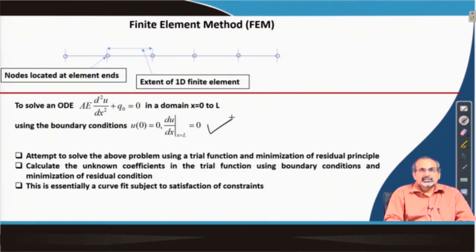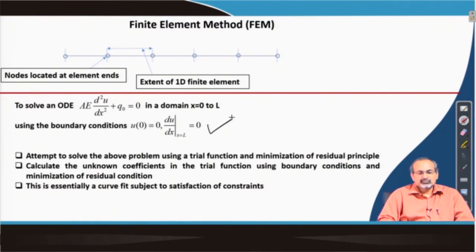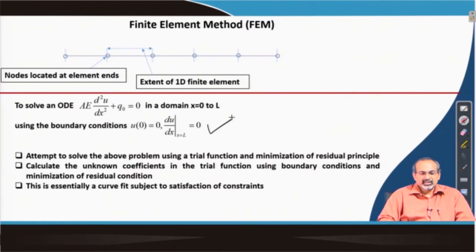Incidentally, this equation is of importance in solid mechanics. Here, we attempt to solve this above problem using some trial functions and based on minimization of residual principle. As we do that, we will find that the trial function will be assumed to be a polynomial with certain unknown coefficients. These unknown coefficients would have to be evaluated based on the boundary conditions satisfied at the ends of the domain and also based on the residual minimization principle.